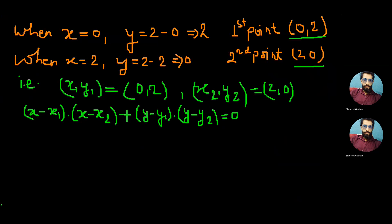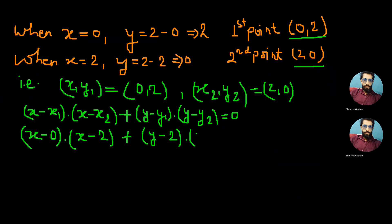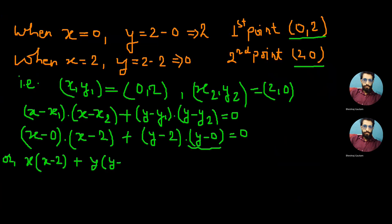Putting the values of x₁, x₂, y₁ and y₂ we get (x − 0)(x − 2) + (y − 2)(y − 0) = 0, which simplifies to x(x − 2) + y(y − 2) = 0.